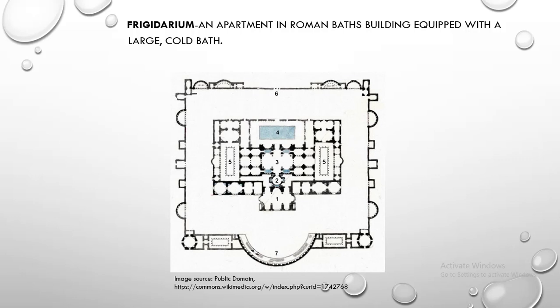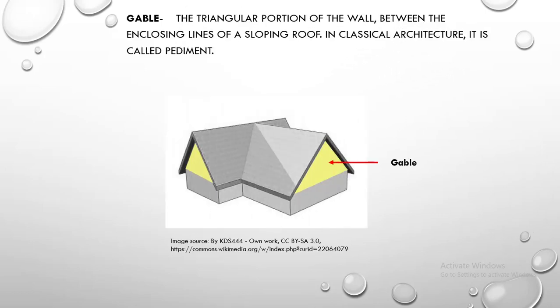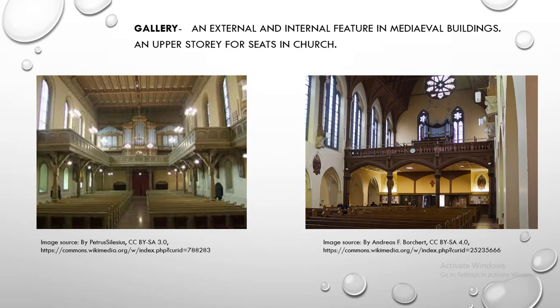Frigidarium. Frigidarium is an apartment in a Roman baths building equipped with a large cold bath. Gable. Gable is the triangular portion of the wall between the enclosing lines of a sloping roof. In classical architecture, it is called a pediment. Gallery. Gallery is an external and internal feature in medieval buildings; an upper story for seats in a church.